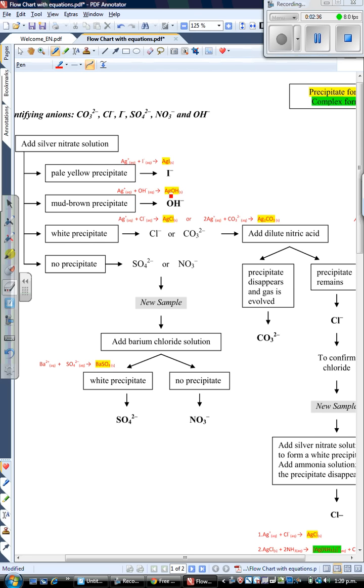The next precipitate you may find is a mud brown precipitate, which is evidence of the hydroxide anion. In this case, you have Ag+ plus OH- forming silver hydroxide, which is S for precipitate.